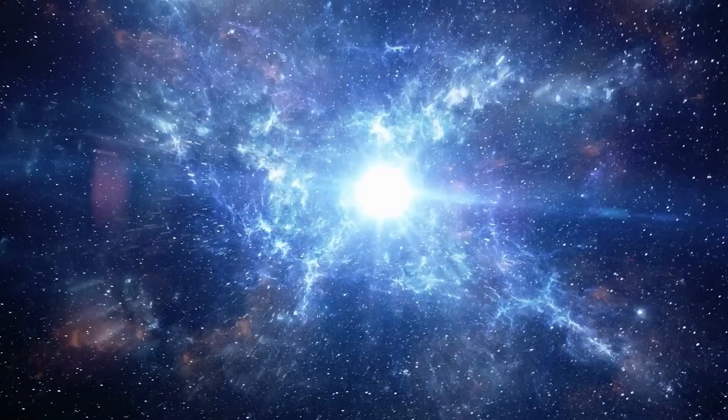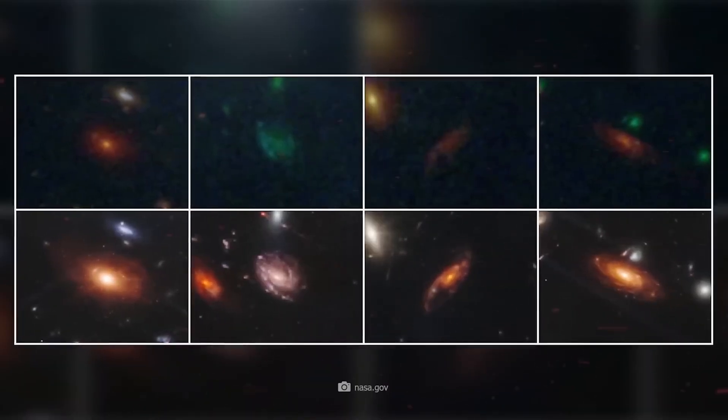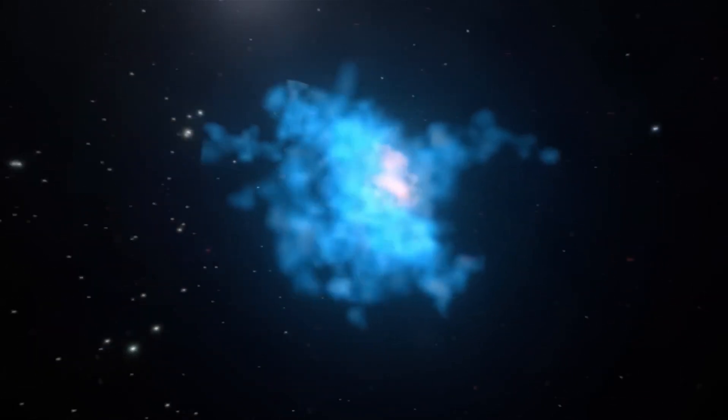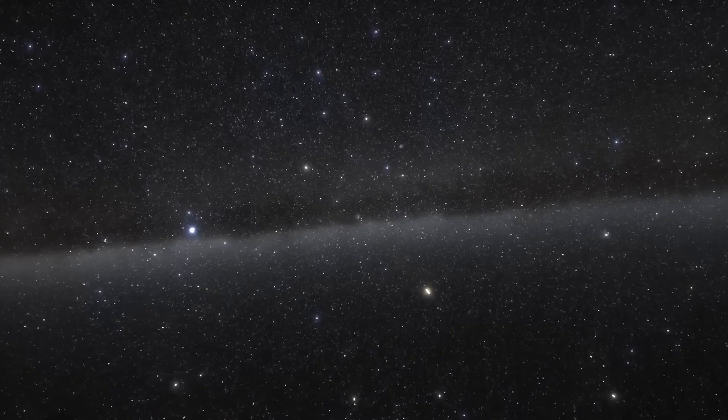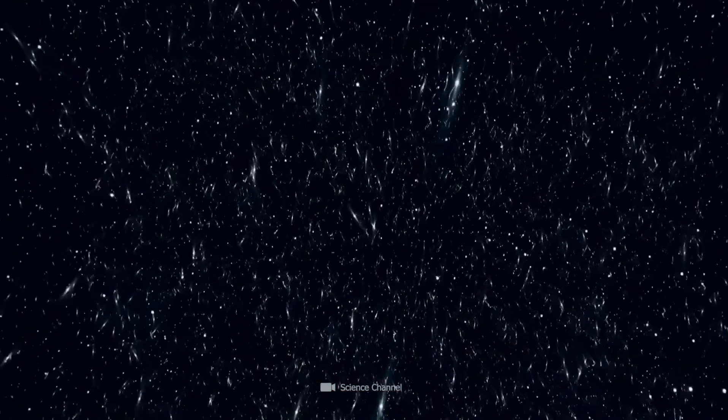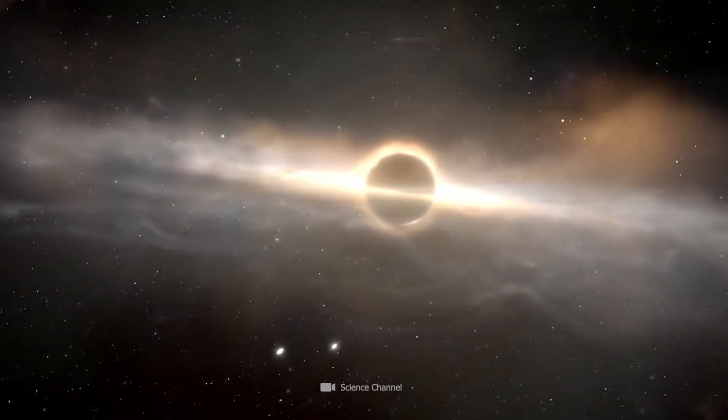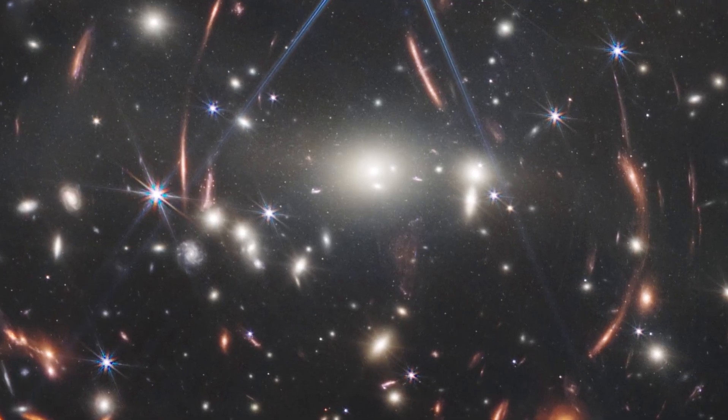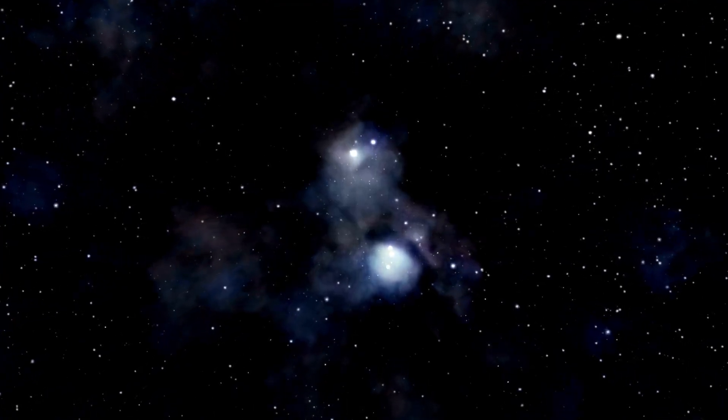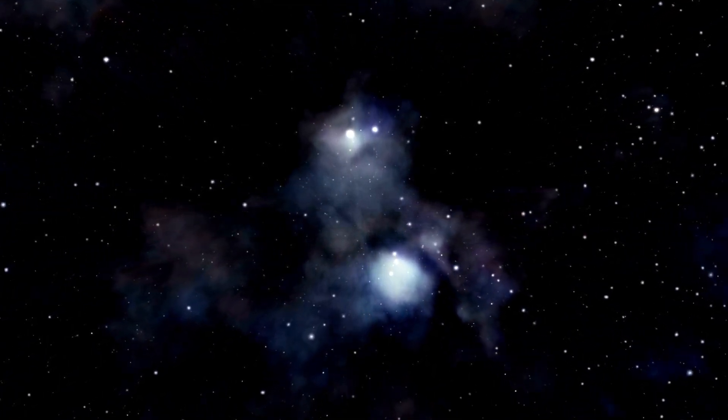The Big Bang occurred 13.8 billion years ago. One second afterward, the universe consisted of radiation, hydrogen, helium, and high-energy particles at a temperature of 18 billion degrees Fahrenheit. Around 400,000 years later, the temperature had cooled to 5,500 degrees Fahrenheit, and the universe was glowing dull red. As the universe continued to expand and cool, that glow disappeared, and the universe became completely dark, the so-called Dark Ages.